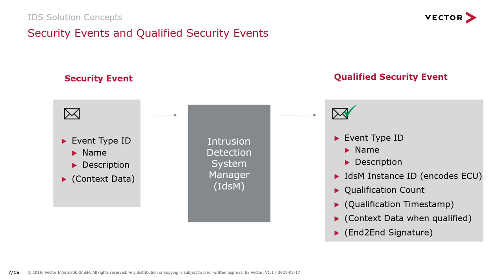How does a security event look after it was qualified by the IDSM? It still has its security type ID, which identifies the name and information about the event. It also gets an IDSM instance ID encoding the ECU that reported it, and a qualification count describing how often the event was reported before it was qualified. Each qualified security event can optionally have a timestamp, context data at the point of qualification, and optionally an end-to-end cryptographic signature that can be evaluated at the Security Operations Center to verify authenticity.